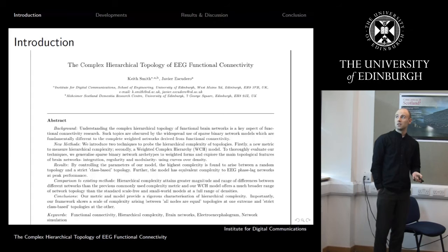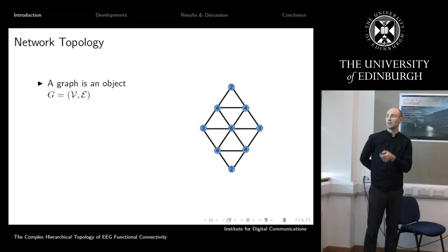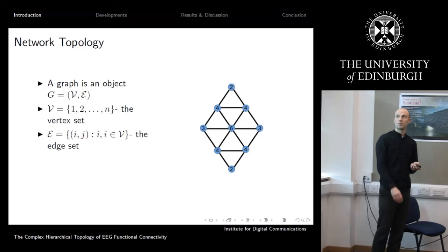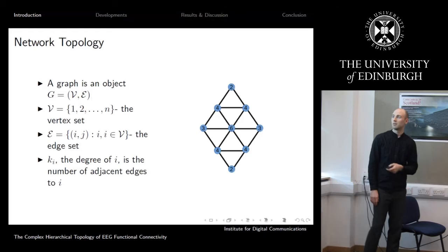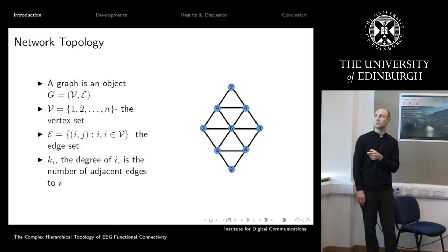Starting with the basics: a network is an object which has vertices — the blue circles — and edges connecting the vertices, and we can analyze the topology of this kind of object. Particularly, we want to know the degree, which is the number of edges adjacent to a node. For example, this vertex here has a degree of three because it has three edges connecting it.